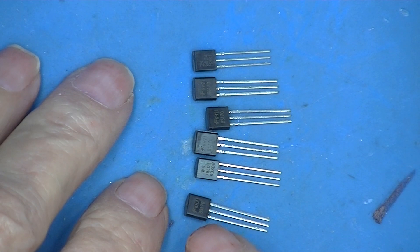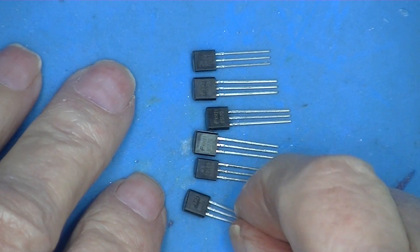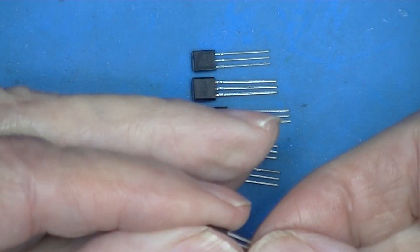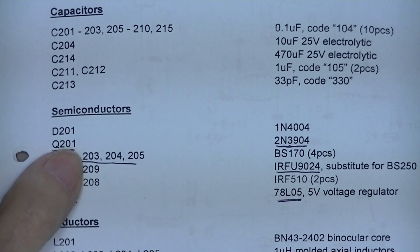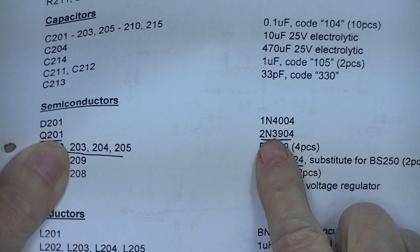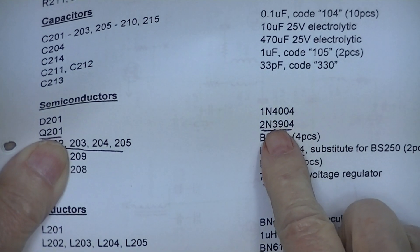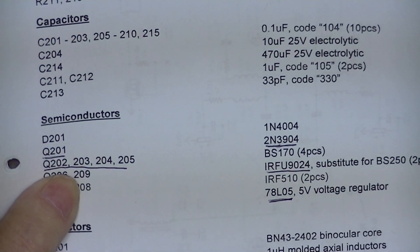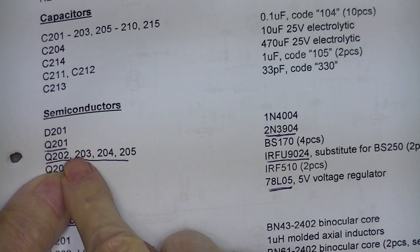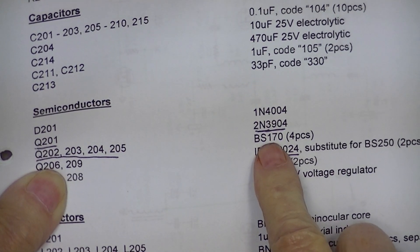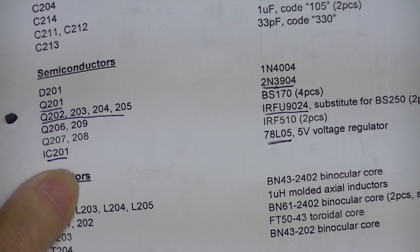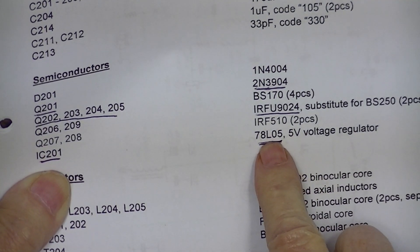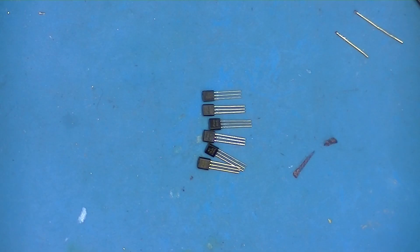There are five of these three terminal devices. They're flat on one side and they're rounded elsewhere. And they are not the same. Q201 is an NPN transistor. It should be marked with a 3904, if not the full number. Then we have these four. They'll be marked BS170. And then we have this one, which is a 5 volt, 100 milliamp regulator. 78L05. Make sure you segregate them.